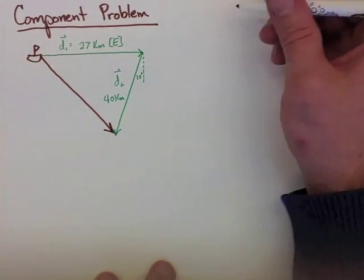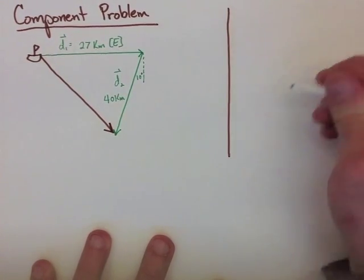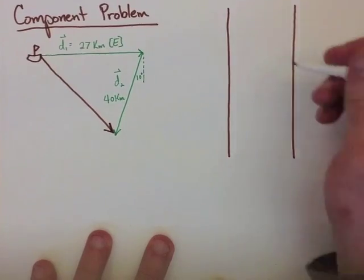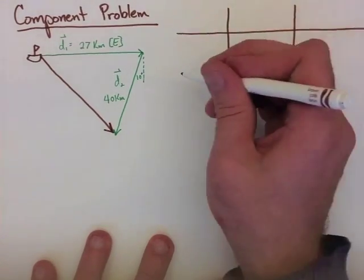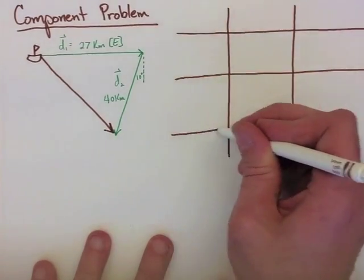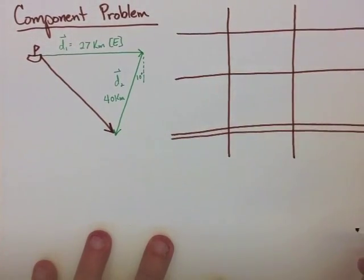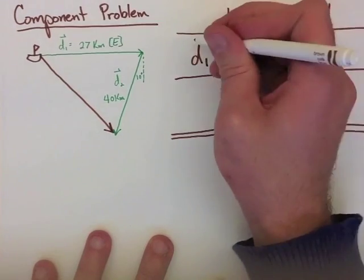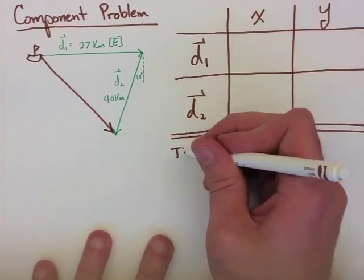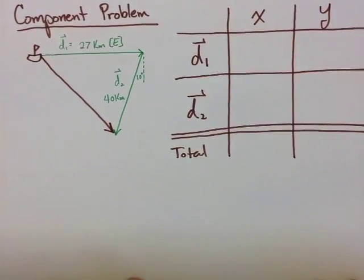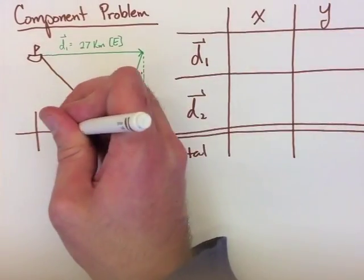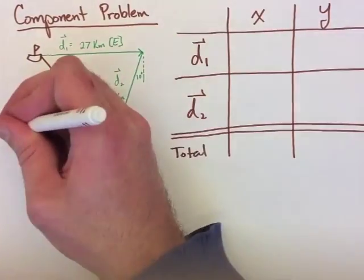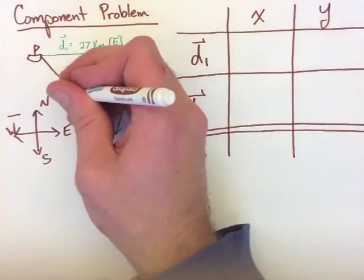To organize these problems, we're going to set up a chart which consists of all of our vectors, the x components for them, and the y components for them. Each row will consist of a new vector, the final row being the total. Before we can actually solve for any of these, we need to set up what's positive and negative. In this case, we're going to make our north and east positive, and our south and west negative.